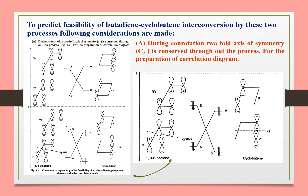During conrotation, the two-fold axis of symmetry — C2 symmetry — is considered for the ring closure. The reactant orbitals are Psi1, Psi2, Psi3, and Psi4, and the product orbitals are sigma, pi, pi*, and sigma*. The symmetry property considered is C2 symmetry.